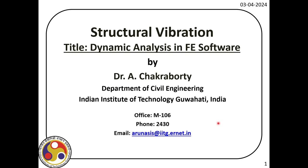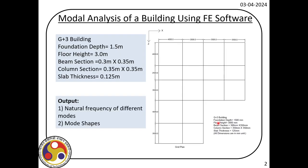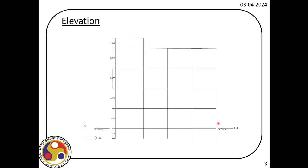If you quickly recall, this is the layout of the structure that we modeled — it is a G plus 3 building and the floor height is 3 meters. I am not going into the details of that because we have already modeled it and then did the time history analysis. This is the elevation of the building.